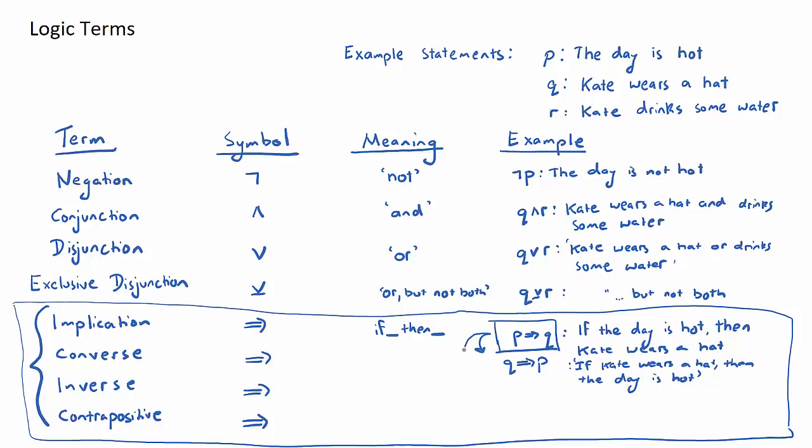Next one, we're looking at the inverse. Now the inverse of this initial statement will be negation p implication negation q. So the order of the letters are the same, however both have the negation symbol in front. And if we were to write this as a statement in words, it would be if the day is not hot, because negation p is the day is not hot, then Kate does not wear a hat, which kind of makes sense.